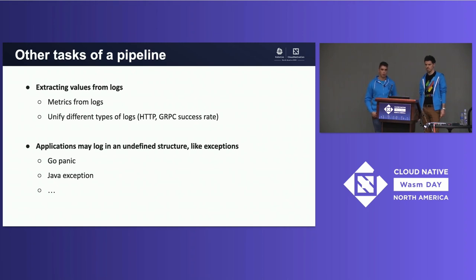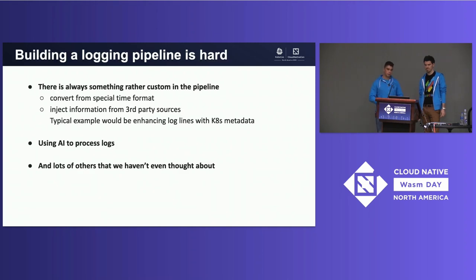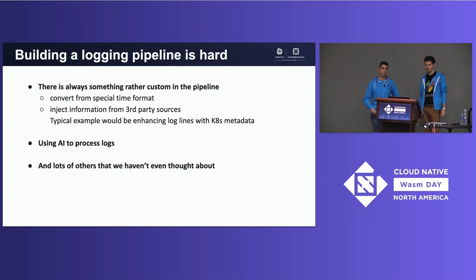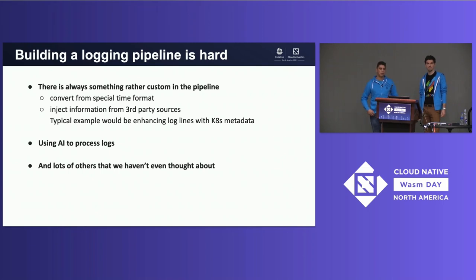You may want to create metrics from an access log, or unify different types of logs like HTTP or gRPC success rates. Even when everything works fine, there are still exceptions like Go panics or Java exceptions. There can also be special time formats to unify, or you may want to inject third-party information into your log lines — a typical example is attaching Kubernetes metadata by querying the Kubernetes API. It's also becoming common practice to use AI to process logs, since there are so many logs it's hard to have common rules for what's good or bad for your system.